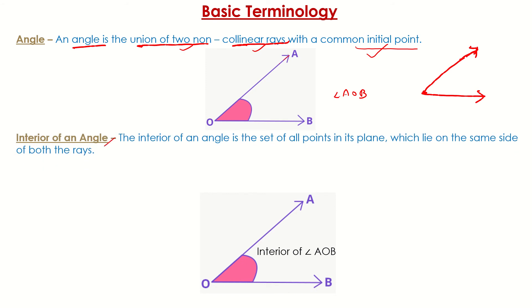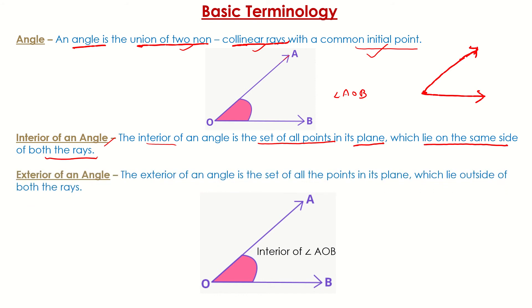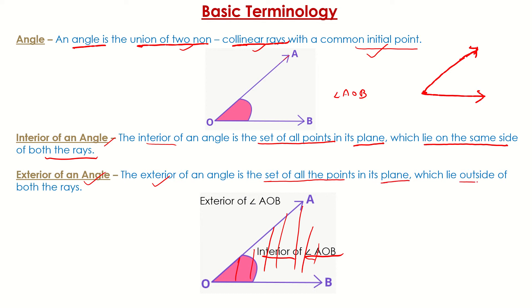The interior of an angle is the set of all points in its plane which lie on the same side of both rays OA and OB. The exterior of an angle is the set of all points lying in its plane which are outside of both the rays. All the points outside these rays are known as the exterior of angle AOB.